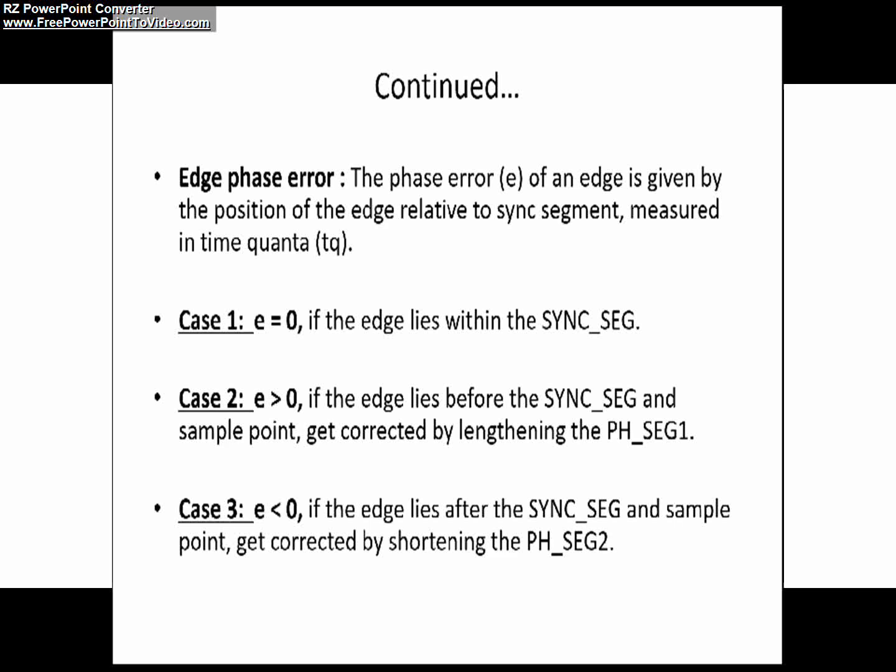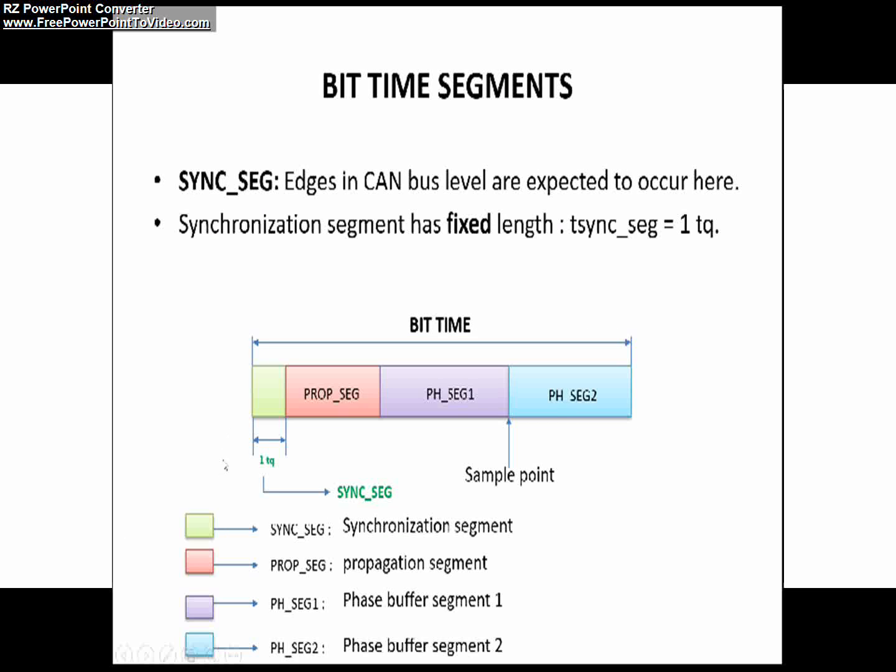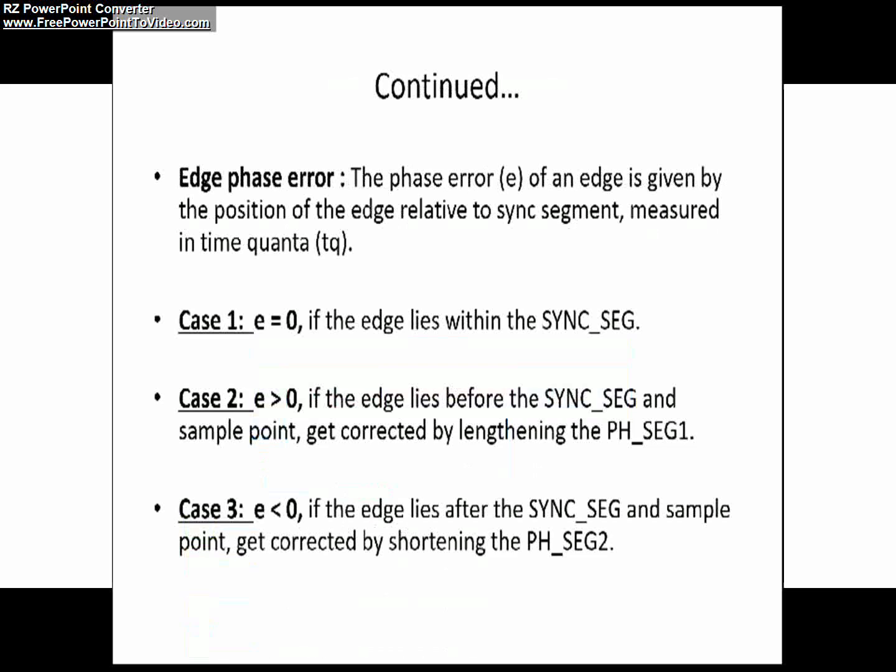Edge phase error means improper occurrence of a bit edge. You can see in this slide, improper occurrence means if the edge is occurring before or after the sync segment, the improper occurrence of the edge is called an edge phase error.